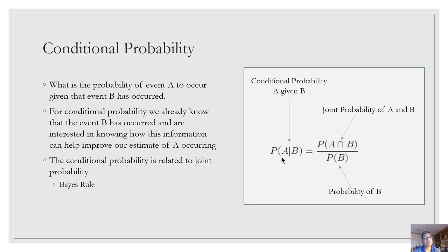The Bayes rule is a very important rule we will revisit. It's something you may have seen in hydrology for frequency analysis. The key takeaway is that conditional probability relates to joint probability and marginal probability. Whenever you see the vertical bar, that is conditional probability; whenever you see the intersection operator, that is joint probability.